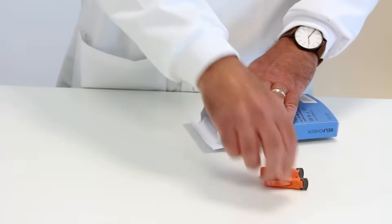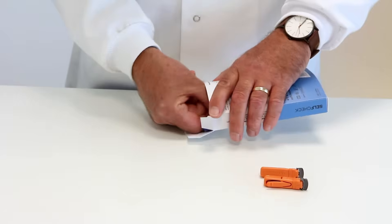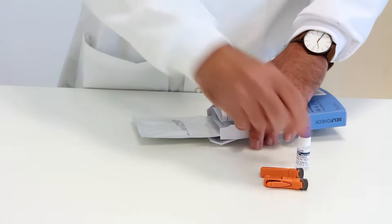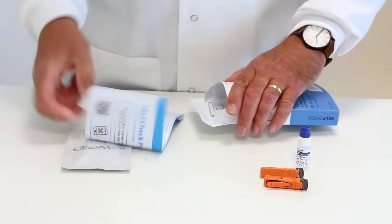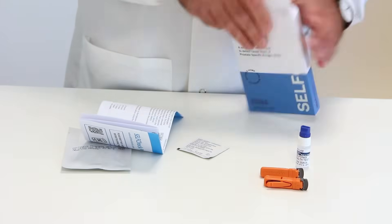Inside, you will find two sterile lancets, a bottle of diluent, a foil pouch containing the test cassette, the instruction leaflet, and a sterile swab.